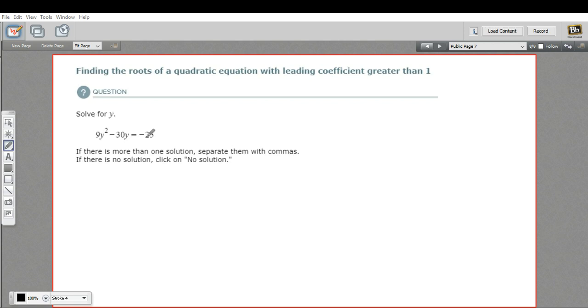The first thing I'm going to do is set this equation equal to 0 so it's ready for factoring by adding 25 to both sides. And that is going to give us 9y squared minus 30y plus 25.